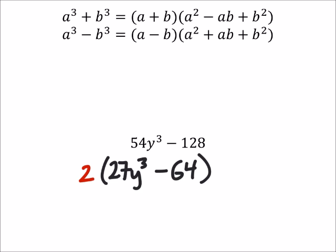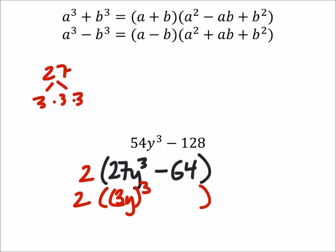So we've got this 27y cubed. 27 is the same as 3 times 3 times 3. So that's going to give us 3y cubed. And this will be minus 64.